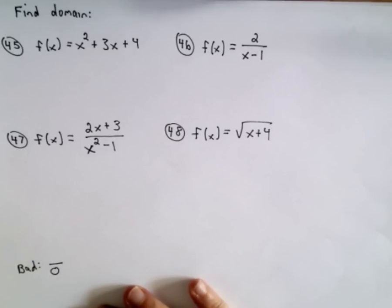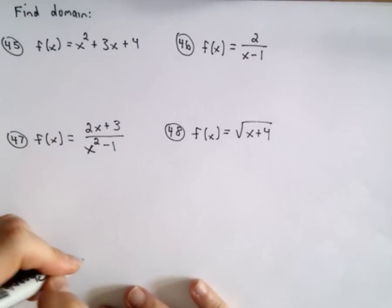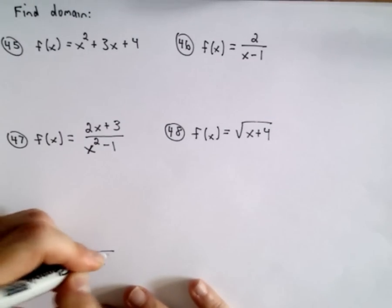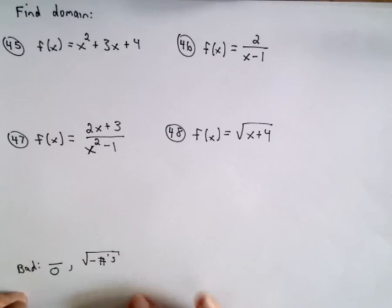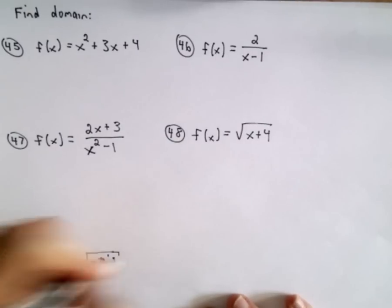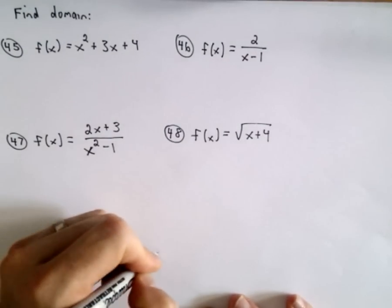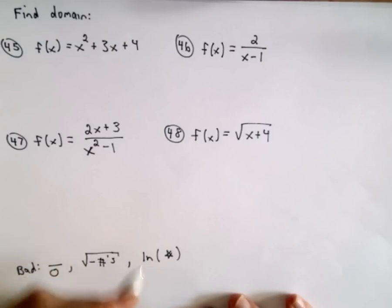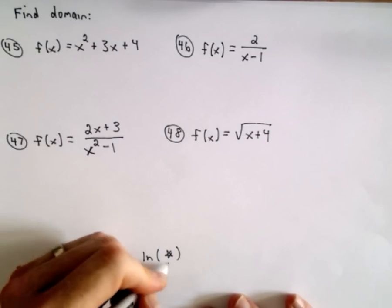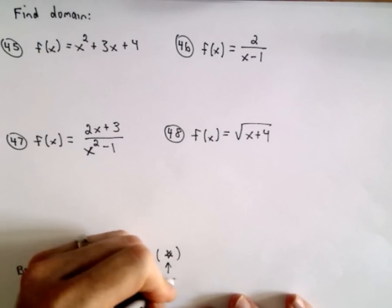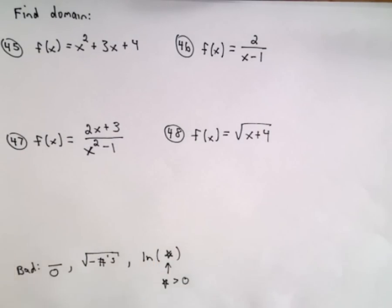You don't want zero in the bottom of a fraction. You don't want negative numbers underneath the square root, and if you have any type of logarithm or natural logarithm, whatever is on the inside of your logarithm has to be strictly greater than 0. So those are going to be kind of the restrictions.